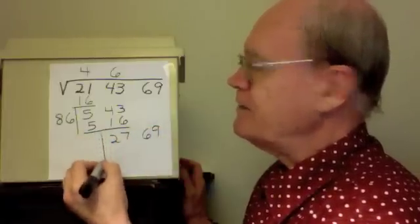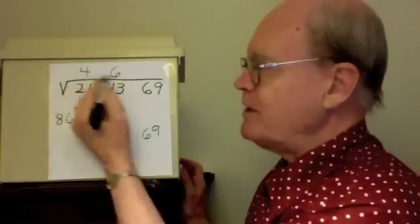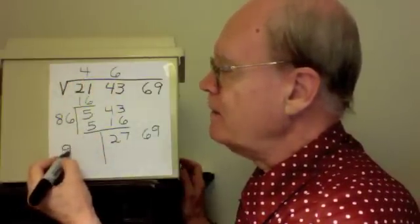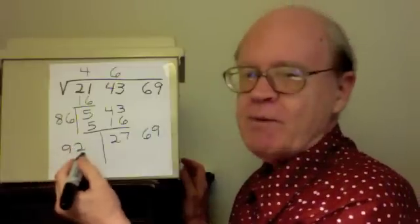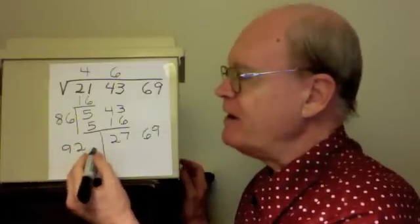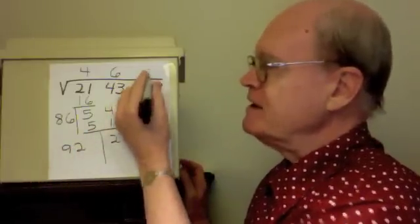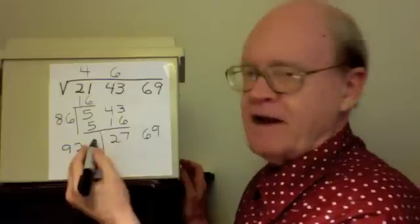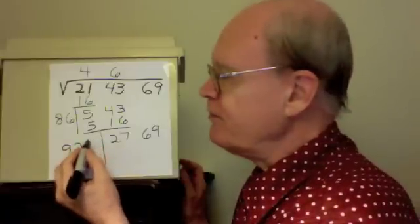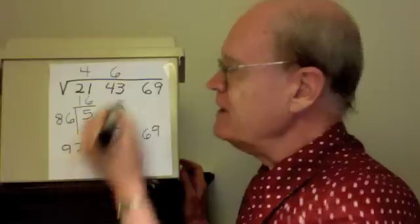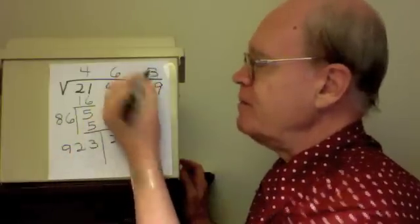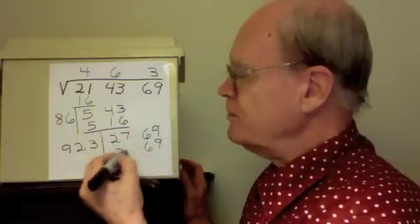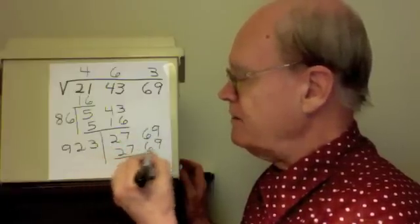I need another divisor. Again, I double what's up here. 46 doubled is 92. This will be 920 something times this. Again, the same numeral here as here. And the numeral that works is 3. 923 times 3 is 2,769. No remainder.